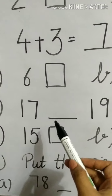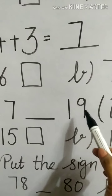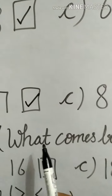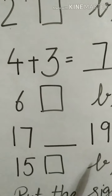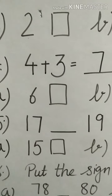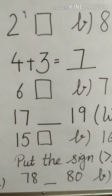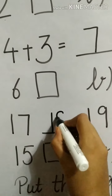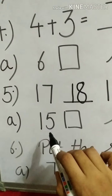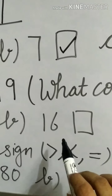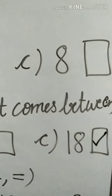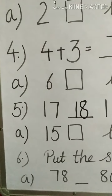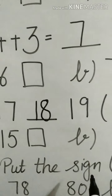Let's move to number 5. It is written: 17 dash 19. In the bracket it says 'what comes between?' — between 17 and 19. Think of the number which comes between 17 and 19. It is simple counting: 17, 18, 19 — so 18 comes between 17 and 19. In option A it is 15, in option B it is 16, and in option C it is 18. So option C is correct and we will put a tick there.